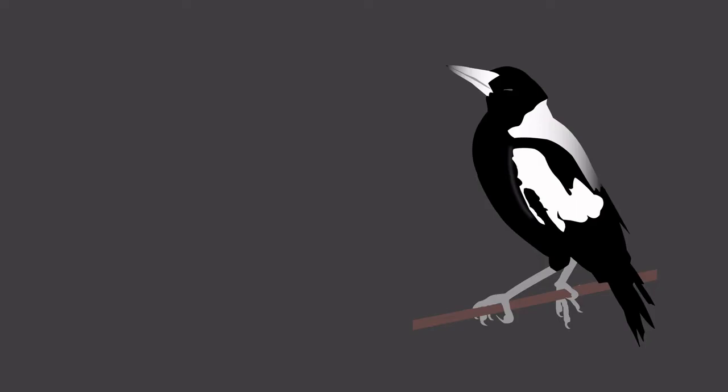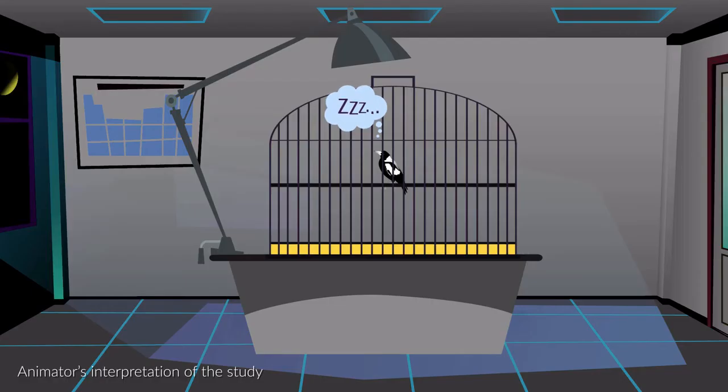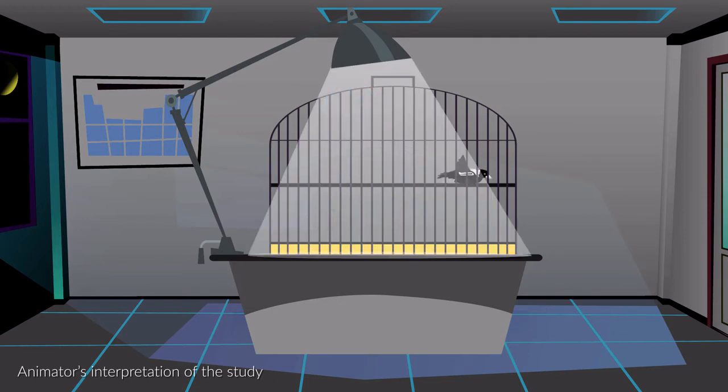What about the rest of the night, after the lights were switched off? When it was dark again, magpies slept more, and they slept more intensely. This might mean that, rather than disrupting the regulation of their sleep, light was keeping them awake directly.